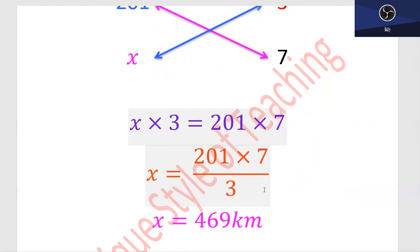After cancellation, the answer is 469 km. That is the distance which will be covered by that car in 7 hours.